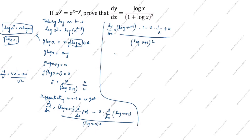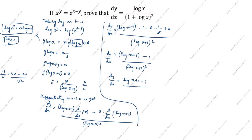So dy/dx equals (log x plus 1) minus 1, since x times (1/x) equals 1 and those terms cancel. This simplifies to (log x plus 1) minus 1, and the plus 1 and minus 1 cancel, giving dy/dx equals log x divided by (1 plus log x) the whole square. Hence proved.